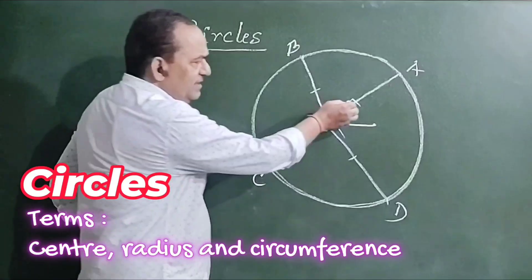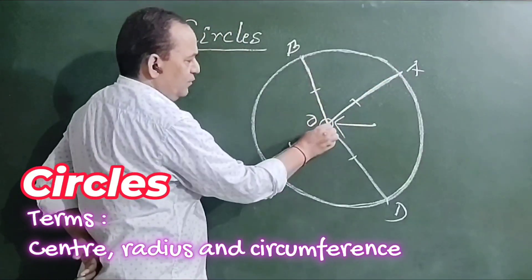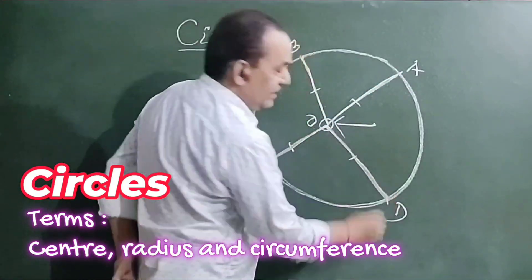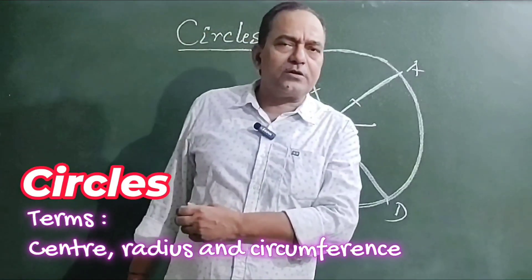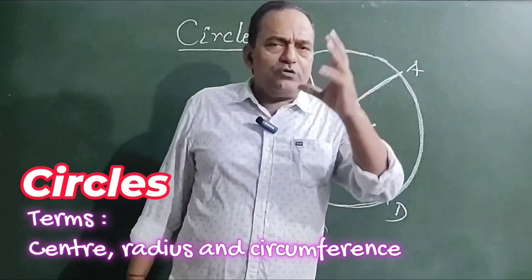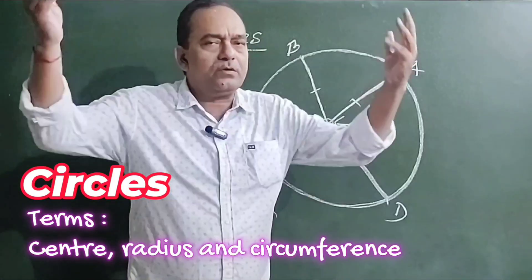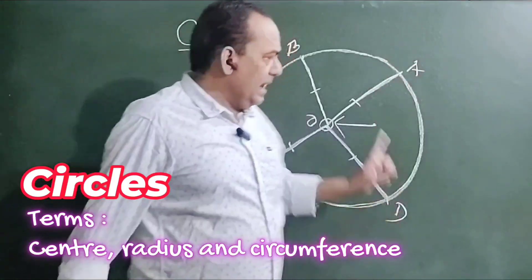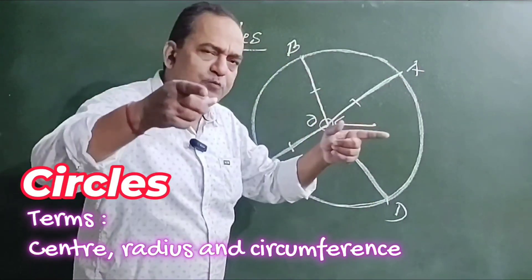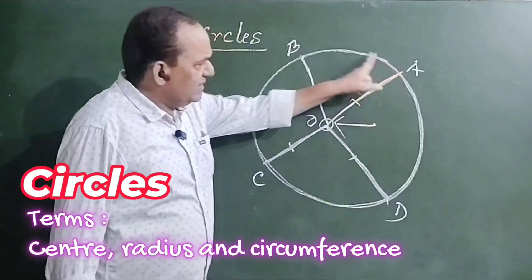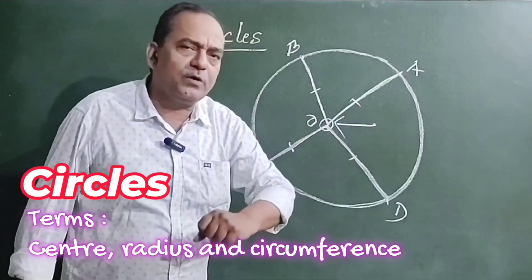And these distances OA, OB, OC, and OD are called the radii of the circle. The radii of any circle are equal. The center is that point from which the distance to the curved line is always equal.